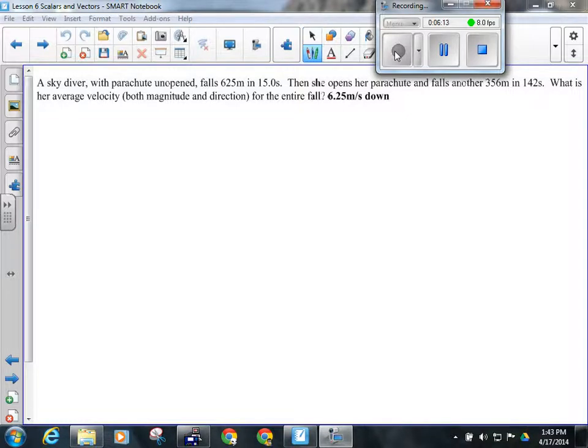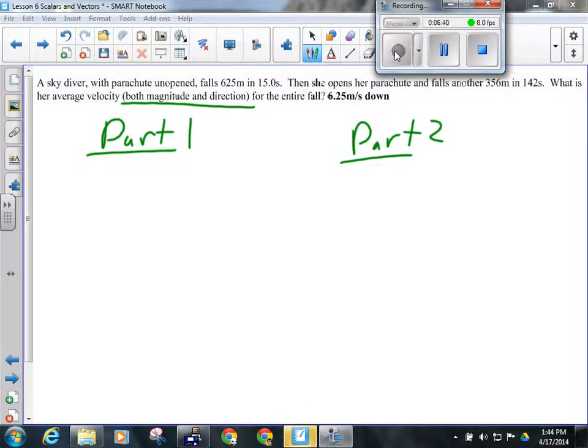So looking at number 11 here. Number 11 is a lot like the one we did on the quiz, it's a two-part question. We want to find the average velocity, both magnitude and direction. Well, which way do you fall? Down, that's easy. You got the direction, it's right there. That part's the easy part, figuring out what direction that'll be in. Now, we want to figure out, though, what's their total displacement, and what is their total time. So, for part one, where they're falling with the chute unopened, we know that the distance is 625 meters, and the time is 15 seconds. In part two, they fall another 356 meters, but with the chute open, so obviously they're falling slower, and it takes 142 seconds.